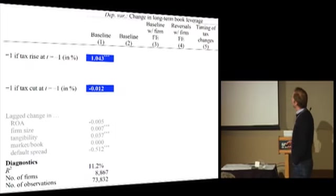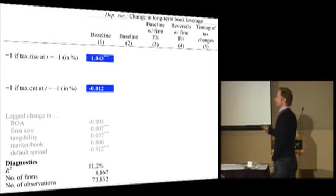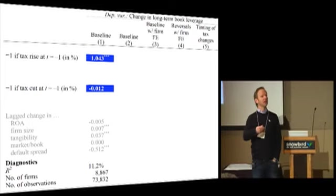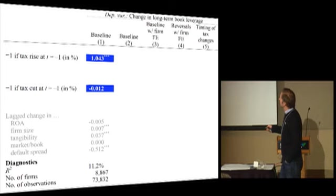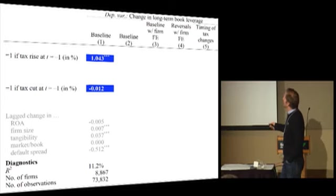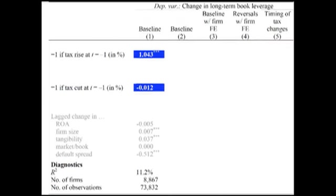This is the baseline — the regression version of the two graphs I've shown you. In response to a tax rise, firms increase their debt by about one percentage point. Throwing in controls and doing it in a regression context gives you more or less the same coefficient as you've seen in the graph. If there's a tax cut, there's nothing.